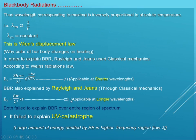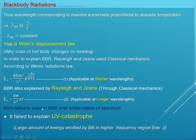But none of these equations is applicable over the entire region of the spectrum. There is a limitation: equation 1 is specific to the shorter wavelength side only, whereas equation number 2 is applicable to the longer wavelength side only. There is no equation that can be applicable over the entire region of the spectrum. Therefore, both equations fail to explain black body radiation over the entire region of the spectrum.